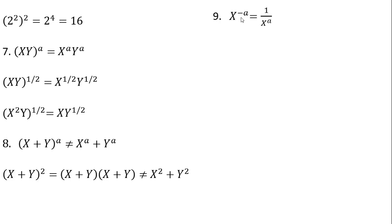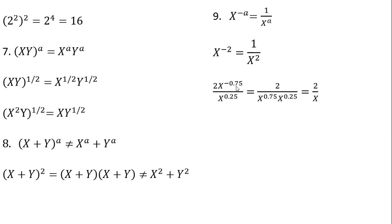Rule 9: x raised to the minus a power can be written as 1 over x raised to the power of a. So x raised to the minus second power can be rewritten as 1 divided by x squared. For example: 2 times x raised to the minus 0.75, with x raised to the 0.25 in the denominator. Using rule 9, move x to the minus 0.75 into the denominator, then add the exponents: 0.75 plus 0.25 is 1, so this simplifies to just 2 divided by x.